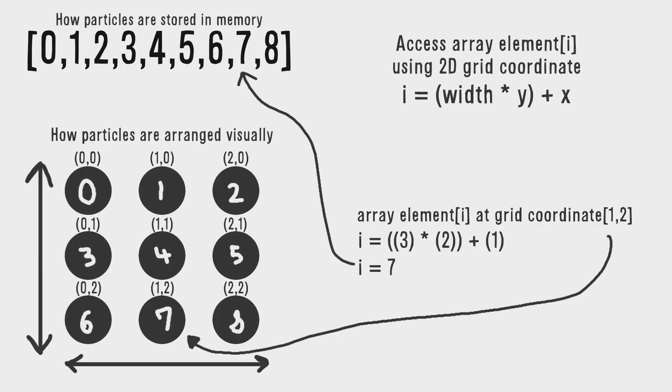Another tip: if you do plan on making this, you should check out the link in the description below that tells you how to use a one-dimensional array with 2D grid coordinates. It's very helpful, especially when you're linking the constraints together. It gets really confusing because for each particle you want to link this particle to that particle. It would be a lot easier if you could just get that using a 2D grid coordinate system. Trust me, if you do make it, you'll thank me later.